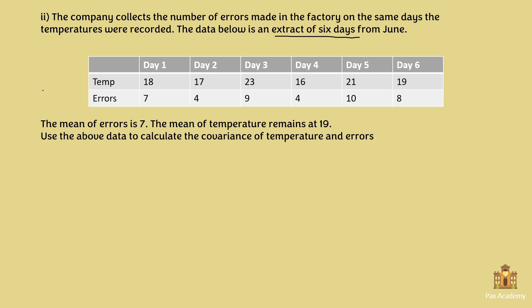So first, let's name the variables. Temperature we can call x and errors can be y. So what we know so far is that x bar is 19, which is the mean of temperature, and y bar is 7, the mean of errors. Now we also know that our sample size here, small n, is 6 because there are 6 days. Excellent.